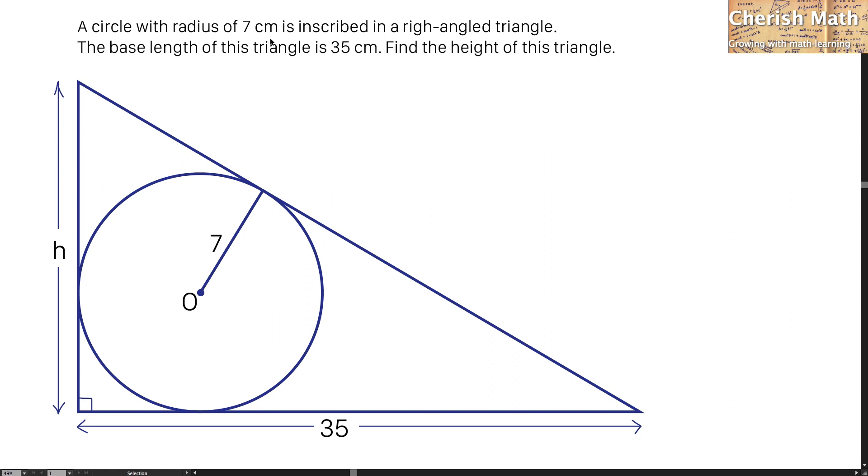A circle with a radius of 7 cm is inscribed in a right-angle triangle. The base length of this triangle is 35 cm. Find the height of this triangle.